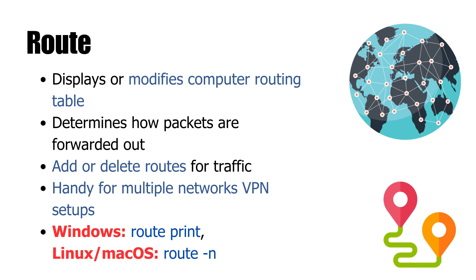The route command lets you peek into, and even edit, your computer's routing table — the roadmap your system uses to decide where to send traffic. On Windows, try route print. On Linux or macOS, route -n shows it in numeric form. Advanced users can add or delete routes to control exactly how traffic flows, which comes in handy for VPNs, multi-network setups, or custom gateways.